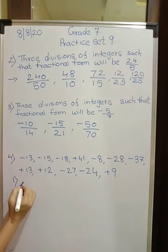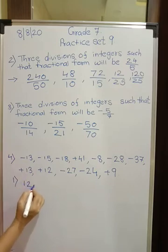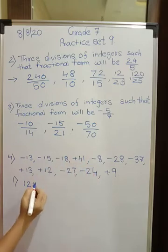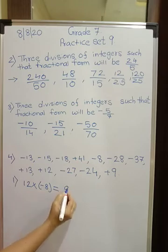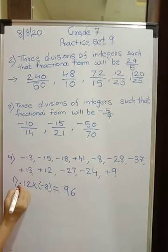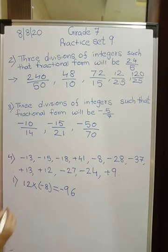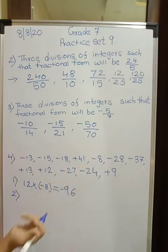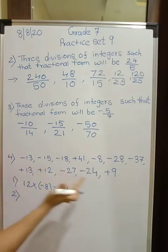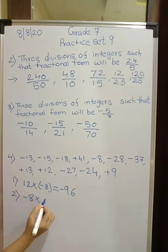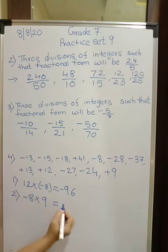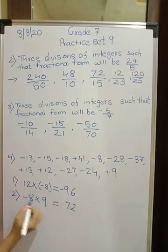Now see, first I am choosing plus 12, so I am writing only 12 into minus 8. What will be your answer? 12 eights are 96. Opposite sign product is always negative. Got it? Similarly 4 pairs you have to write. Now what else you can write? 9 and minus 8 you can choose. So minus 8 into 9. Again, 9 eights are 72. Opposite sign product is again negative.